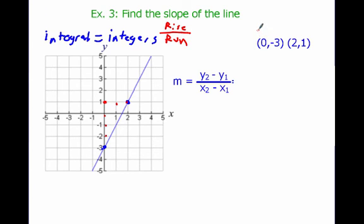So let's go label these. X1, Y1 and X2, Y2. All I'm going to do is I'm going to substitute in Y2 minus Y1. So 1 minus negative 3. X2 minus X1, 2 minus 0. 1 minus negative 3 is the same thing as 1 plus 3, which gives me 4. 2 minus 0 is 2. 4 divided by 2 gives us 2.